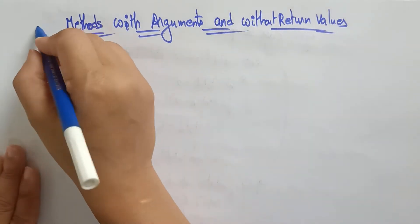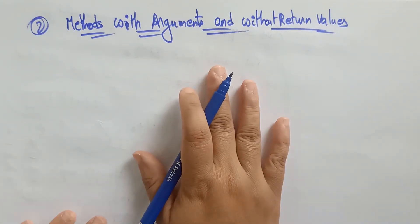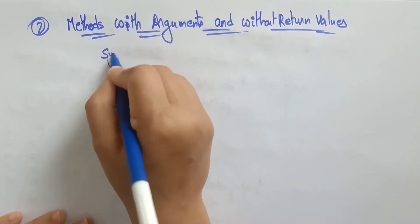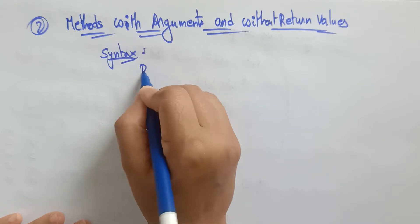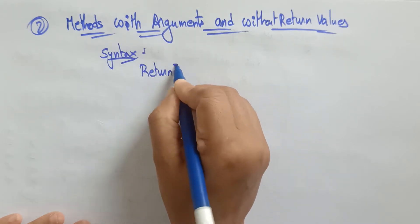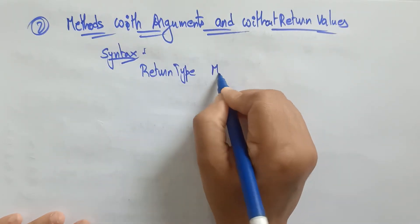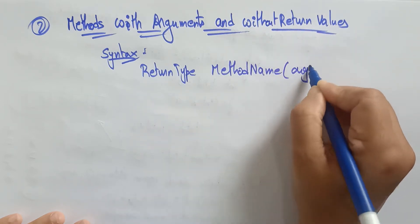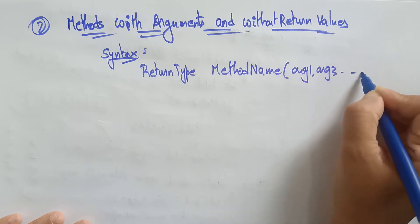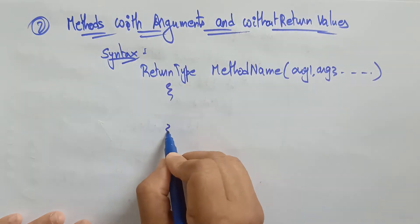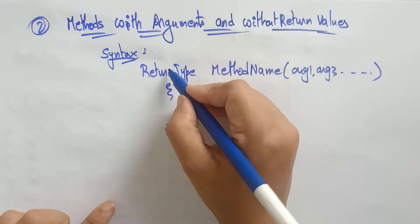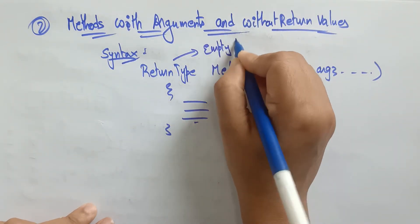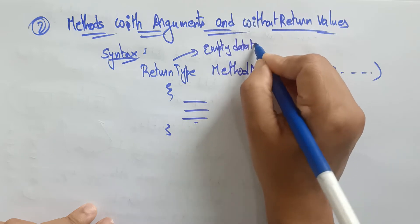Welcome back. Now let's see the second type of method — a method with arguments but without return values. Let me write the syntax here. The syntax is: return type, method name, argument one, argument two, and a group of statements. The return type, whatever you mention here, if it is an empty data type — and an empty data type is nothing but void.